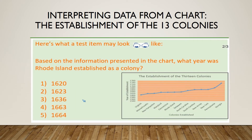Here's what a test item may look like. Based on the information presented in the chart, what year was Rhode Island established as a colony? And here we have our five options: option 1, 1620; option 2, 1623; option 3, 1636; option 4, 1663; and option 5, 1664.